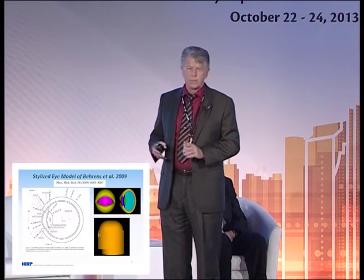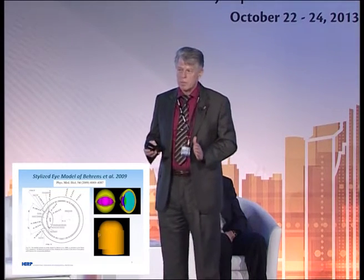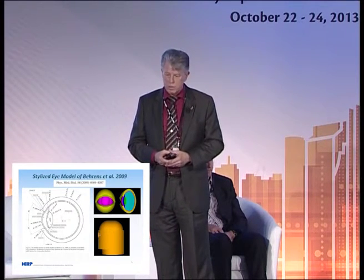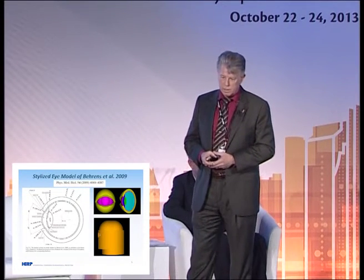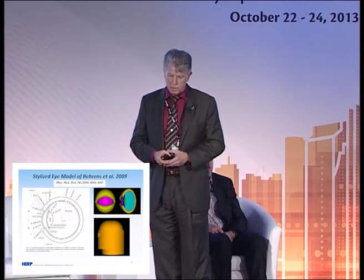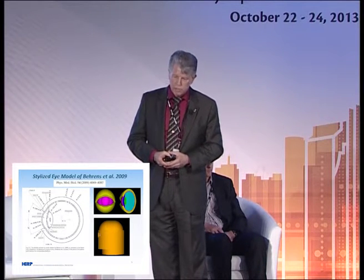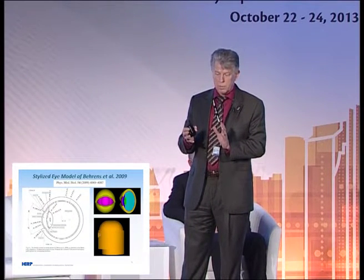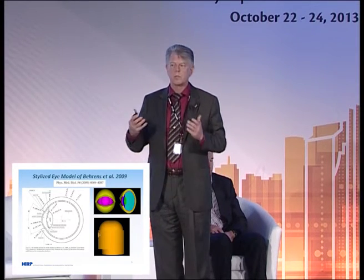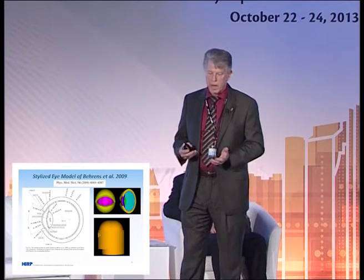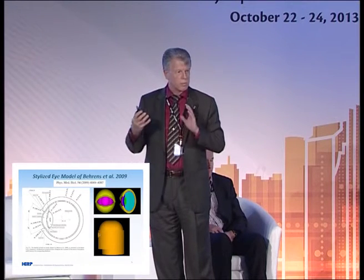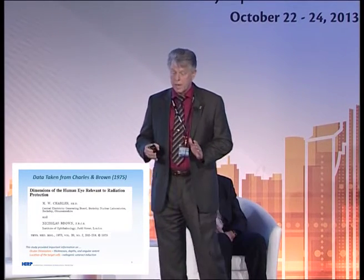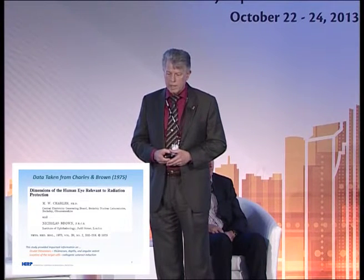We couldn't use the voxel phantoms — in some phantoms the eye lens was represented by maybe one or two voxels — so we had to invoke a stylized model. There was some very nice work by Rolf Behrens and Gunta Dietze at PTB, and Maria Zankl at Helmholtz-München, published in 2009. The diagram on the left shows the stylized model, with some NURBS modeling shown on the other side. For electron dosimetry, a standalone eye model was used, but for photons and neutrons, the non-ocular tissues and bony anatomy surrounding the eye needed to be considered for scatter and absorption, so those stylized models were placed in a larger stylized model of the head.